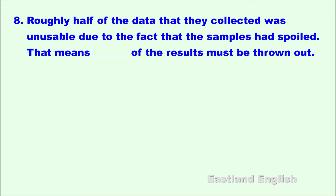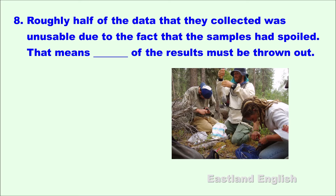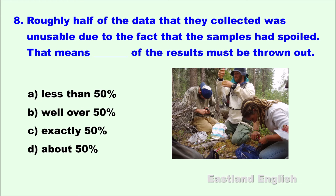Number eight. Roughly half of the data that they collected was unusable due to the fact that the samples had spoiled. That means blank of the results must be thrown out. A. Less than 50 percent. B. Well over 50 percent. C. Exactly 50 percent. D. About 50 percent.